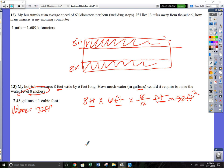You have to change that 8 inches to feet. It's just going to be 8 twelfths of a foot. 8 times 6 times 2 thirds, and you should get 32 feet cubed. The question is how many gallons do I need to put in there?